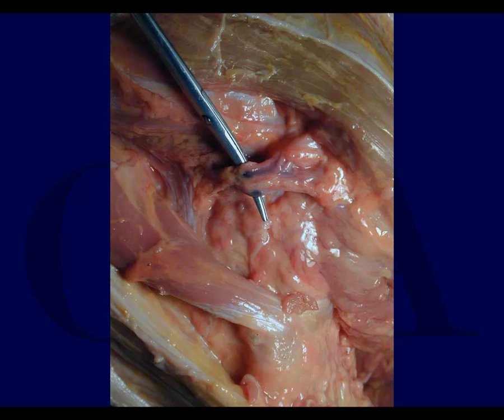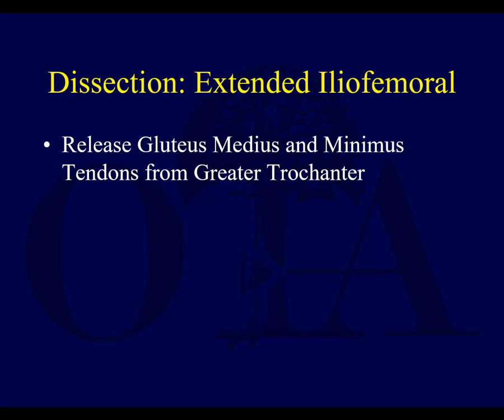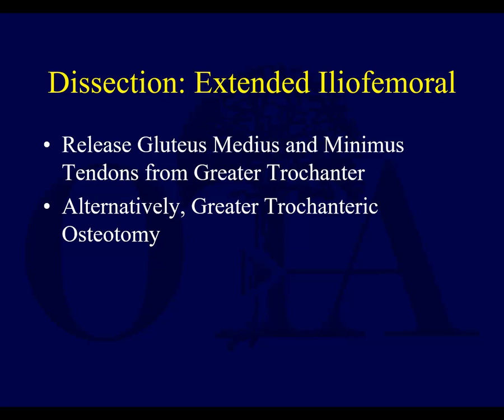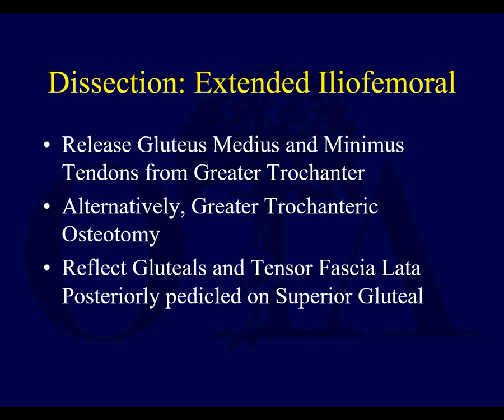You've released the abductors off of the pelvis, and now you release the tendons off of the greater trochanter. Pretty much you've taken the muscle off its origin and insertion — it's really just hanging on by its neurovascular pedicle coming from the greater sciatic notch. Alternatively, you can do an osteotomy of the iliac crest and greater trochanter instead of tenotomies, though it's just a slight difference in technique.